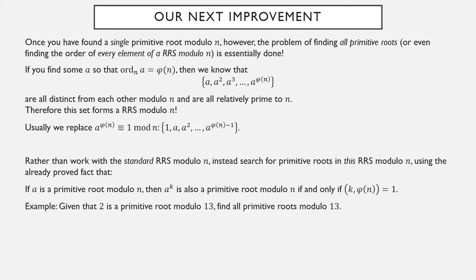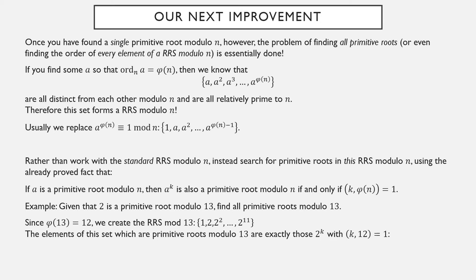For example, given that 2 is a primitive root mod 13, find all the primitive roots mod 13. We're going to make a reduced residue system of 1, 2, 2 squared, 2 cubed, all the way up to 2 to the 11. The elements of this set that are primitive roots are powers of 2 where the power is relatively prime to 12. So: 2 to the 1st, 2 to the 5th, 2 to the 7th, and 2 to the 11th. There are all primitive roots mod 13 — any integer equivalent to one of these four numbers mod 13.